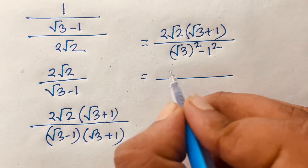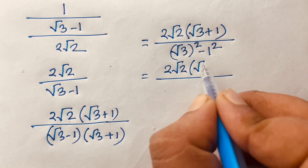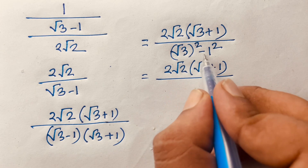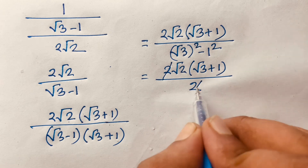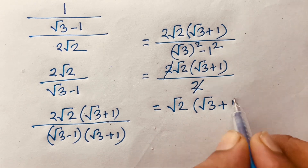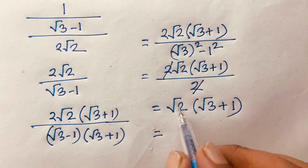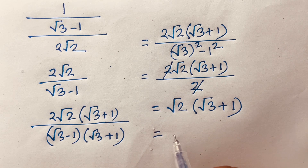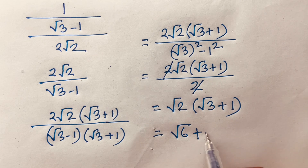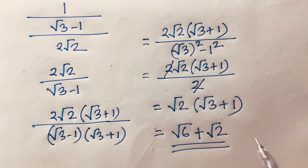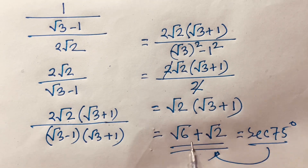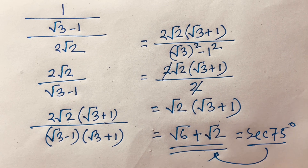The 2 in the denominator cancels with the 2 in the numerator, leaving √2 · (√3 + 1). Expanding: √2 · √3 = √6, and √2 · 1 = √2. So our final answer is sec(75°) = √6 + √2.